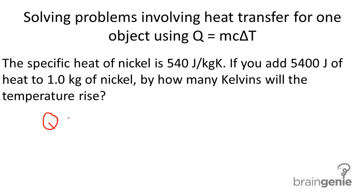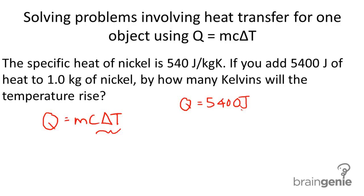Our formula is Q equals MC delta T. We're looking to solve for delta T in this equation. Our Q is 5,400 joules, our mass is one kilogram, and our C, our specific heat capacity, is 540.